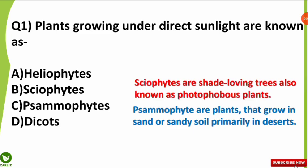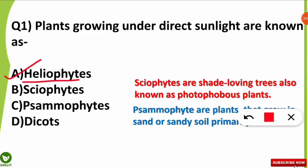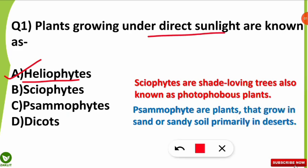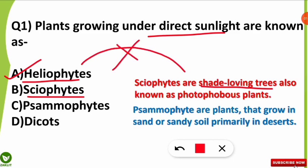The first question was: plants growing under direct sunlight are known as what? The correct option is option A — heliophytes are the plants which grow under direct sunlight. You should also know the other options: sciophytes or skiophytes are shade-loving trees, opposite of heliophytes. They are photophobous plants — photophobous meaning not loving or afraid of light — so they are shade-loving and not sunlight-loving.